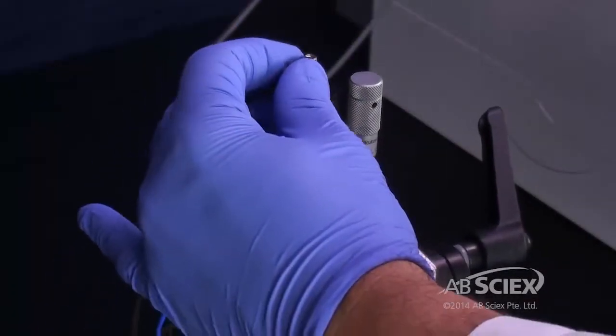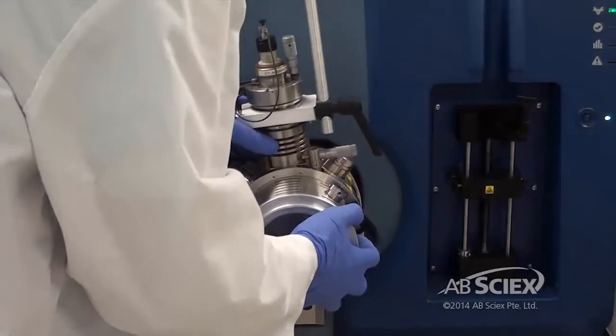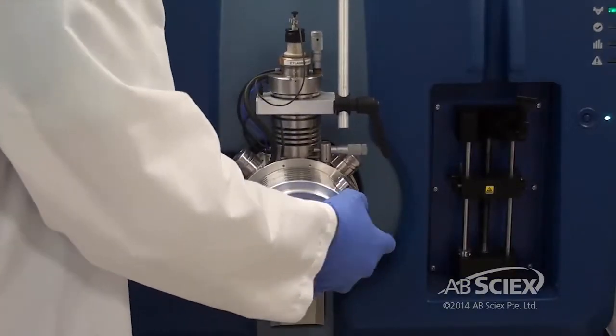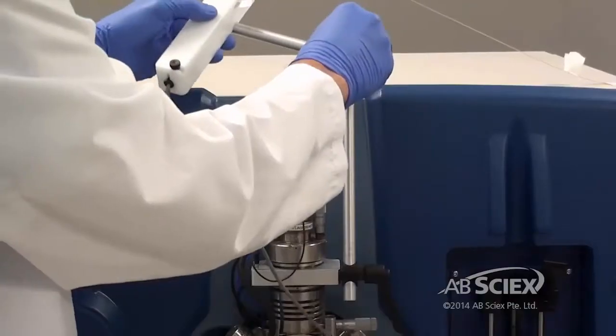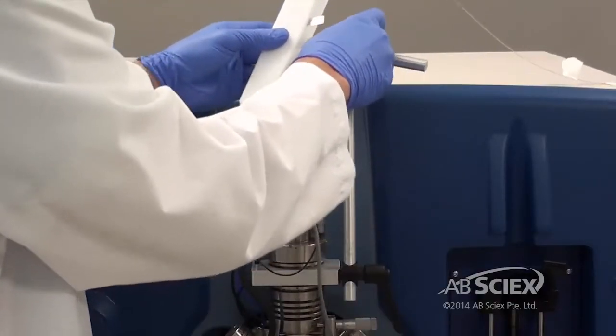Refit the grounding clip and reinstall the source onto the vacuum interface. Reinstall the column heater and reattach the column.